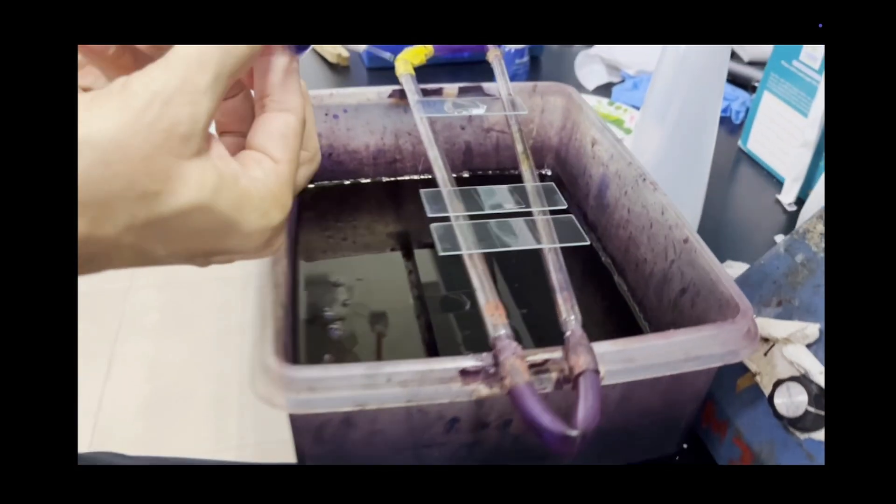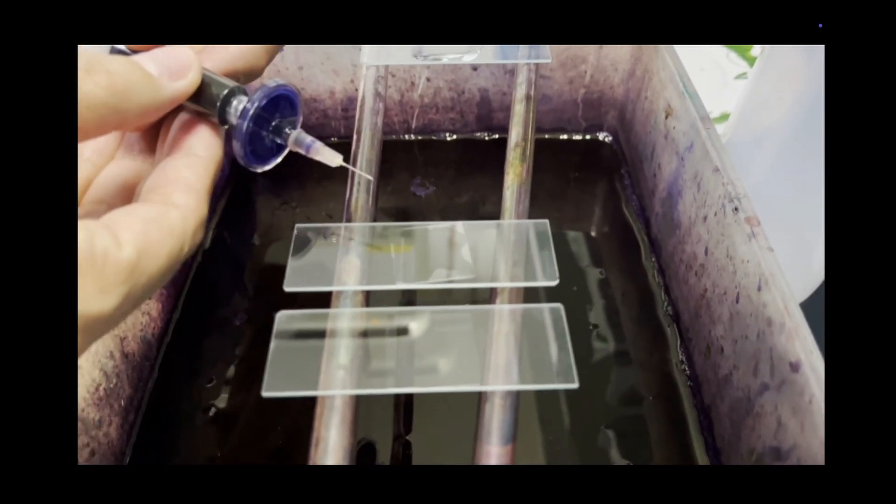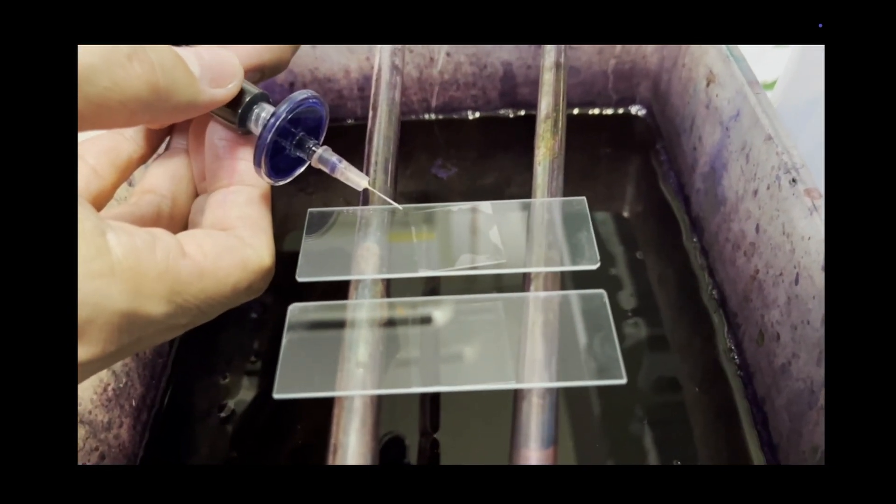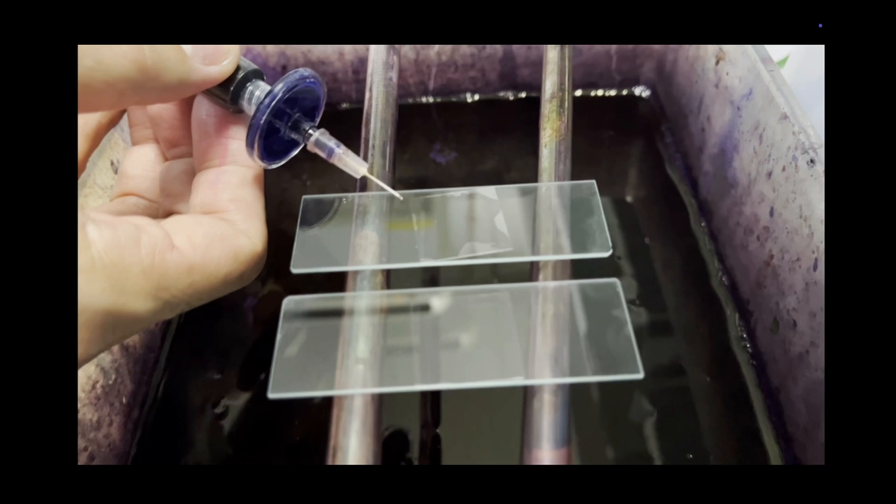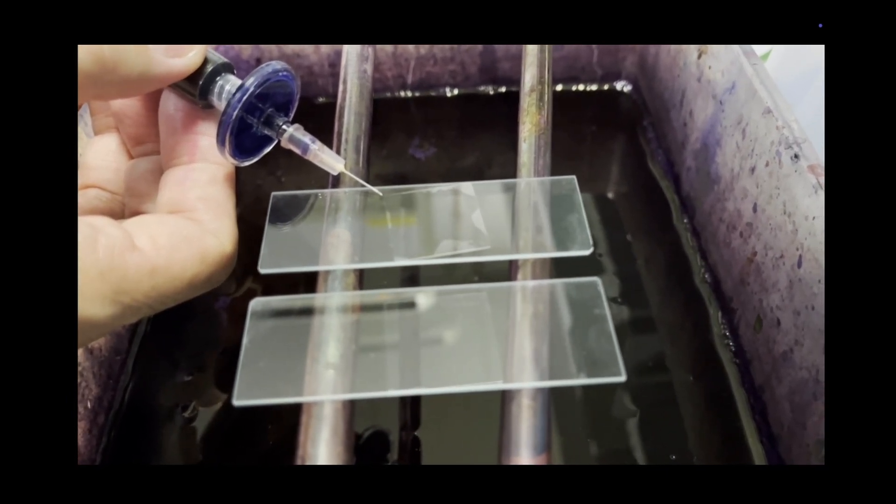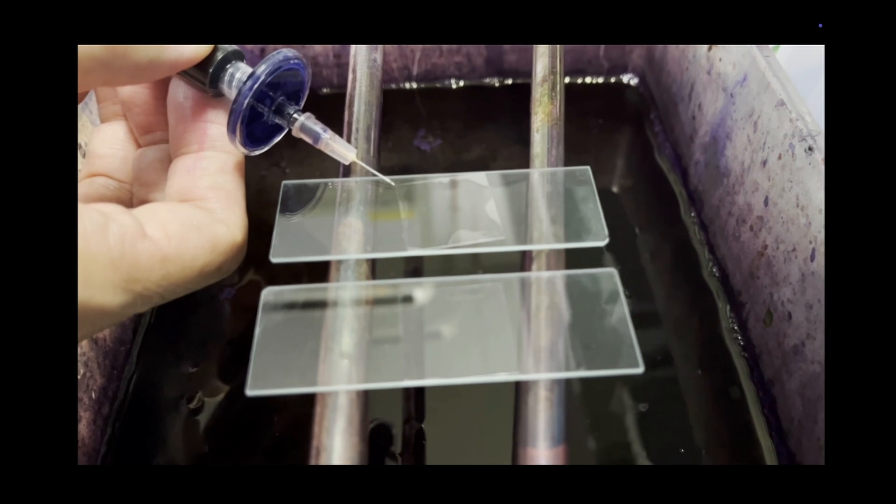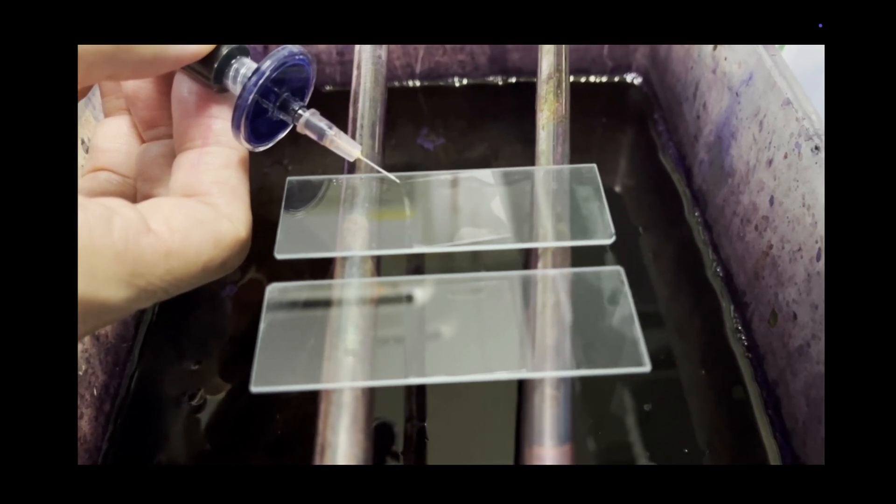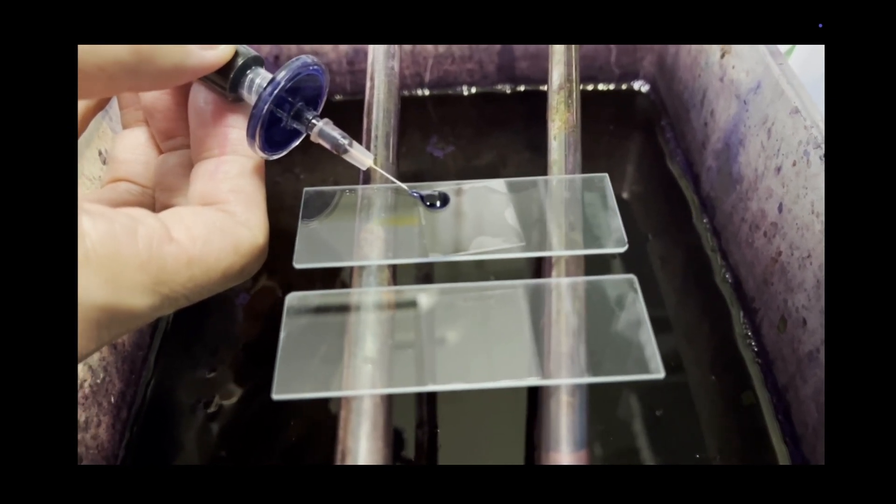Once it is ready after five minutes, we need to put about two drops of the Ryu stain at the edge of the cover slip so that the stain slowly spreads through.